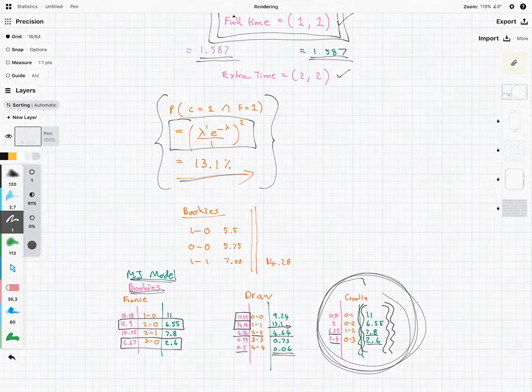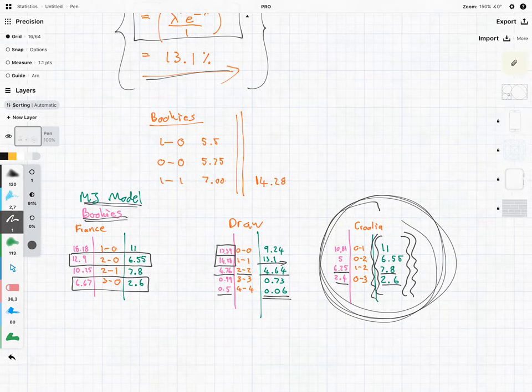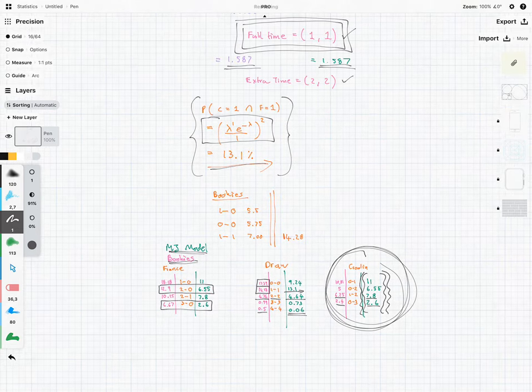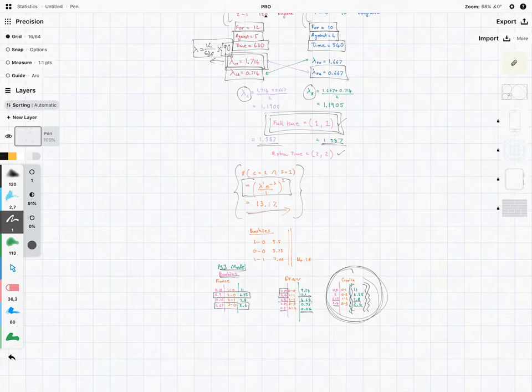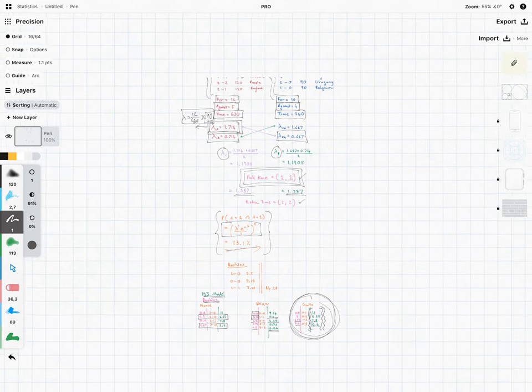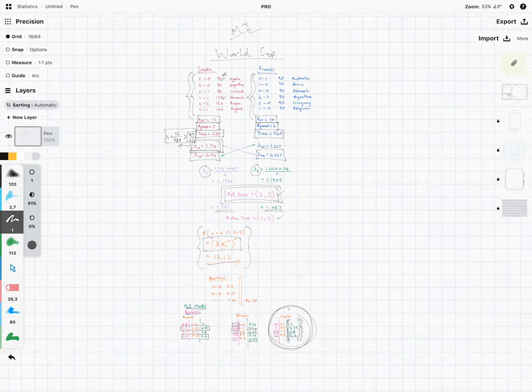And that's why if the bookies are favoring the French, it makes sense to bet on Croatia because then you're going to get a higher payout. But we'll see. Let me know in the comment section below what your score prediction is. But it's quite interesting to see how close the mathematics is to the bookies who are considering a whole bunch of other factors as well.